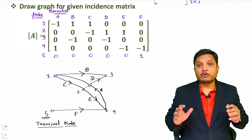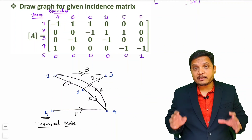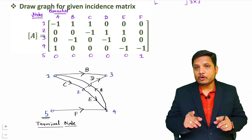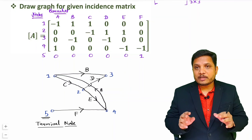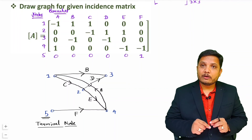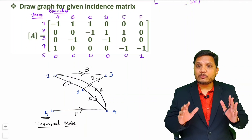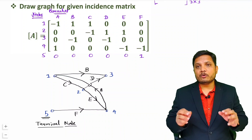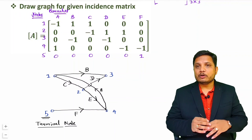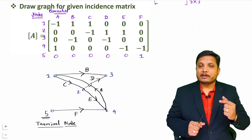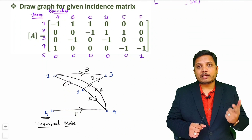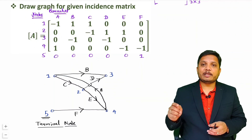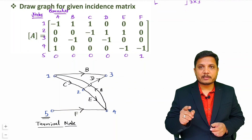It is now clear how to draw a graph from an incidence matrix as well as from a reduced incidence matrix. Whenever you have a reduced incidence matrix, you add one row such that column-wise addition becomes zero, giving you the full incidence matrix. From that, we can draw the graph where the direction of branches goes from plus 1 to minus 1. I hope you have understood this. If any query is there, just place it in the comment box. Thank you so much for watching this video.